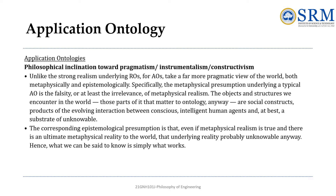The next feature is pragmatism over realism. Unlike reference ontologies, which assume an objective reality, application ontologies take a pragmatic approach. They don't claim to describe reality perfectly; instead, they define concepts based on human needs and utility. In other words, application ontologies are built to work, not to seek the absolute truth. For example, consider a healthcare diagnosis system that uses AI to suggest treatments. A reference ontology would try to define disease in an absolute, universal sense considering all theoretical aspects. But an application ontology would focus on how doctors interact with diseases — what symptoms they observe, what treatments they use, and what decision-making processes are followed in hospitals. Practical usability is more important than the abstract philosophical definition of a disease.